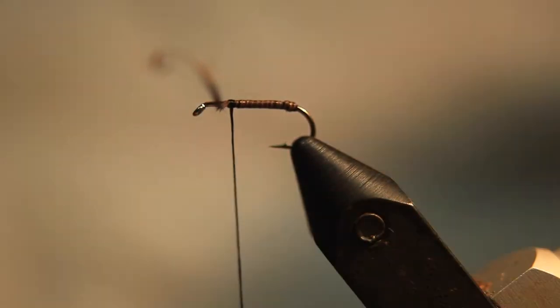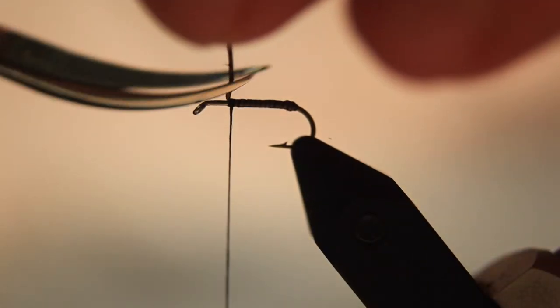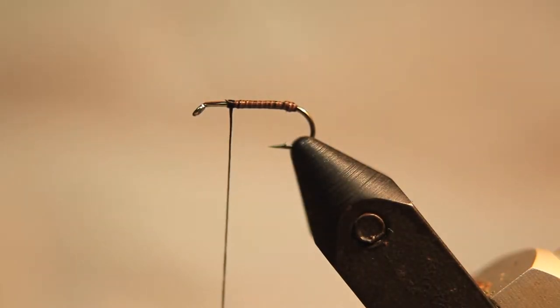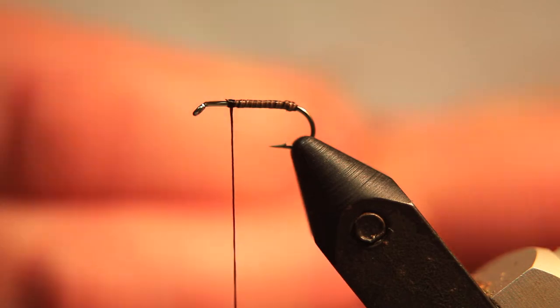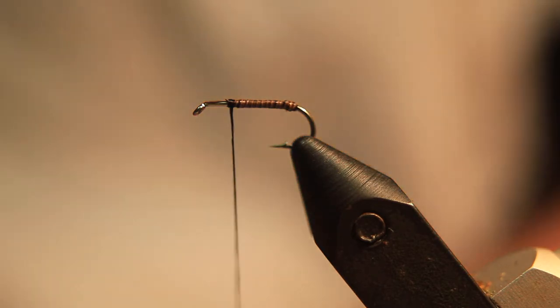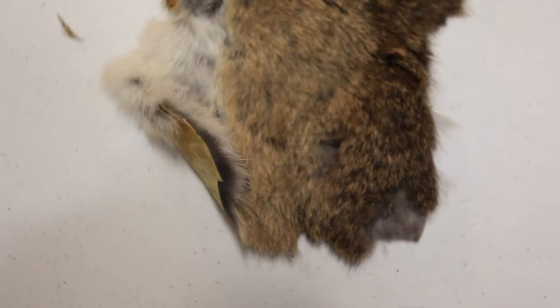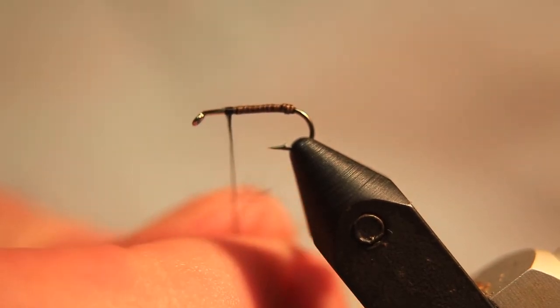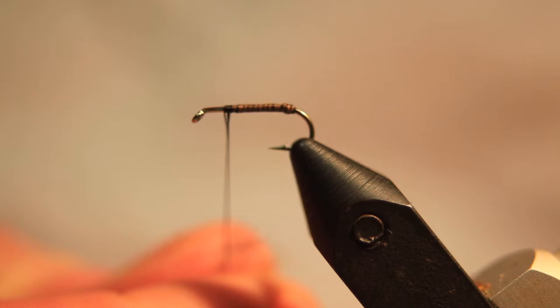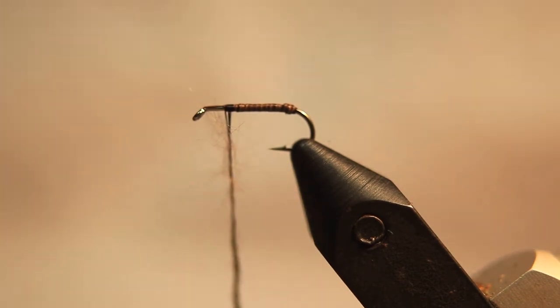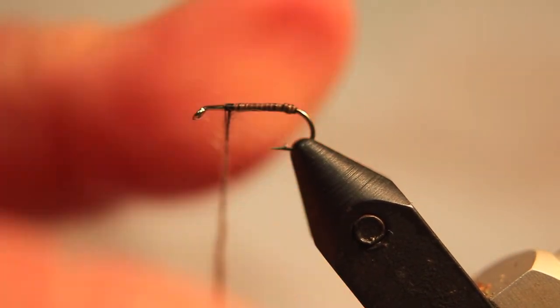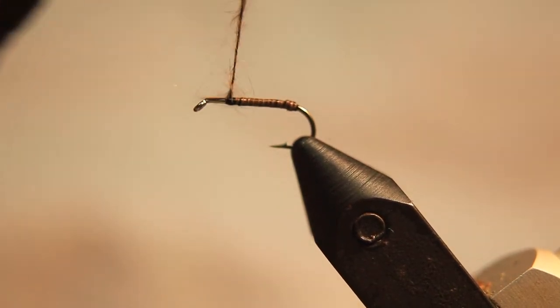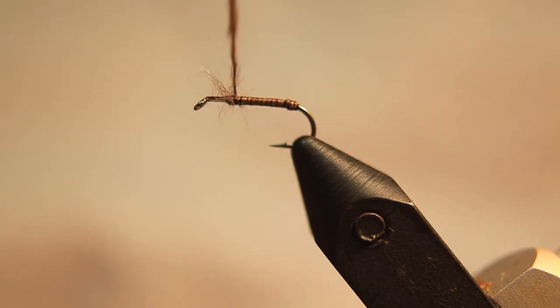Now, the next requirement is rabbit fur. We need the under fur of the rabbit fur without any guard hairs. Make sure there's no guard hairs in the dubbing material that we're using. So, there's your rabbit skin. You need it from there. So we take the under fur of the rabbit skin, and we spin it onto the thread. Make sure you work your way from the bottom up.